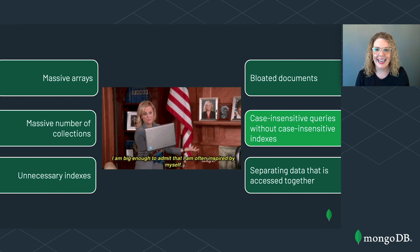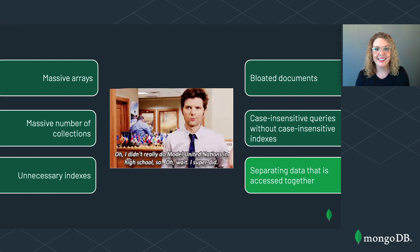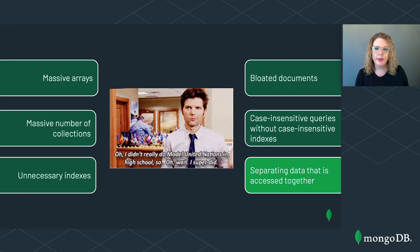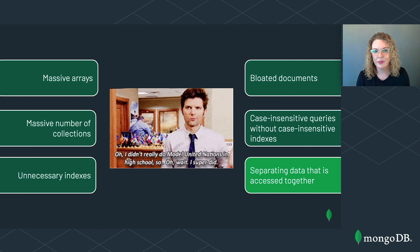Remember to create a case insensitive index when you want to run case insensitive queries. Finally, the sixth anti-pattern: separating data that is accessed together. This refers to separating data between different documents and collections that is frequently accessed together. We worked through the Model UN example where Leslie needed to run a countries report. We began with four collections and needed $lookup to generate the report, then remodeled our data to only two collections. In the end, we did not need to use $lookup, so we were able to generate our report incredibly quickly. Data that is accessed together should be stored together.